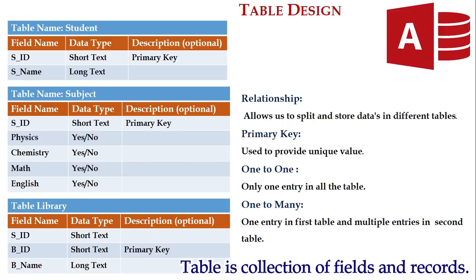Next, the table subject has the field name SID — the student ID — short text and primary key, followed by Physics, Chemistry, Math, and English with data type yes or no. The final table is library, having SID as short text, BID as short text and primary key, and BNAME as long text.